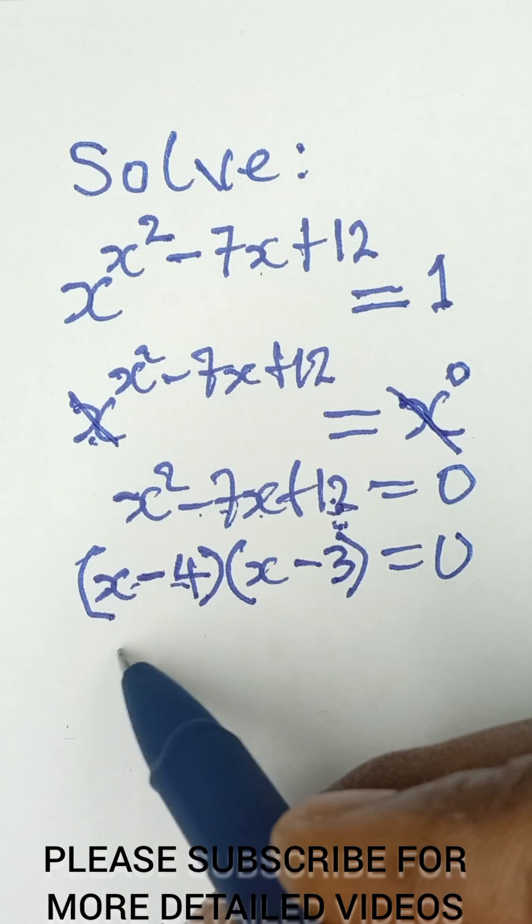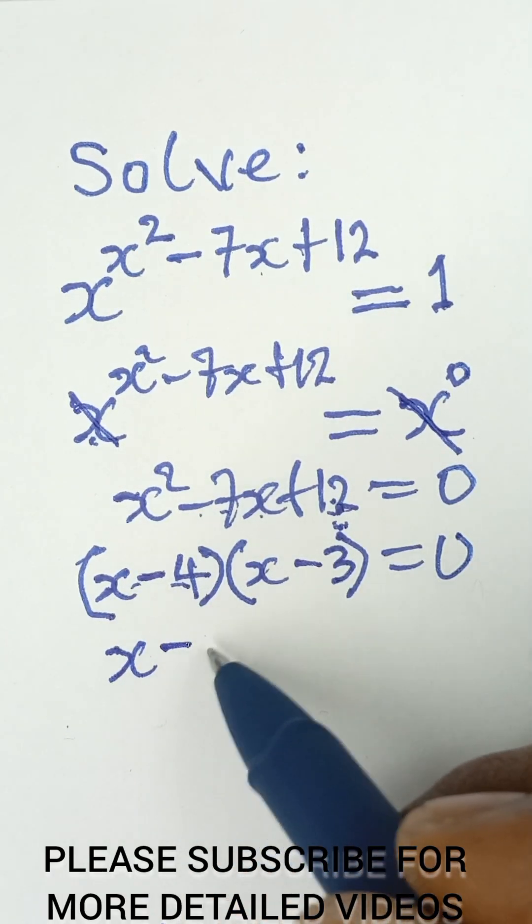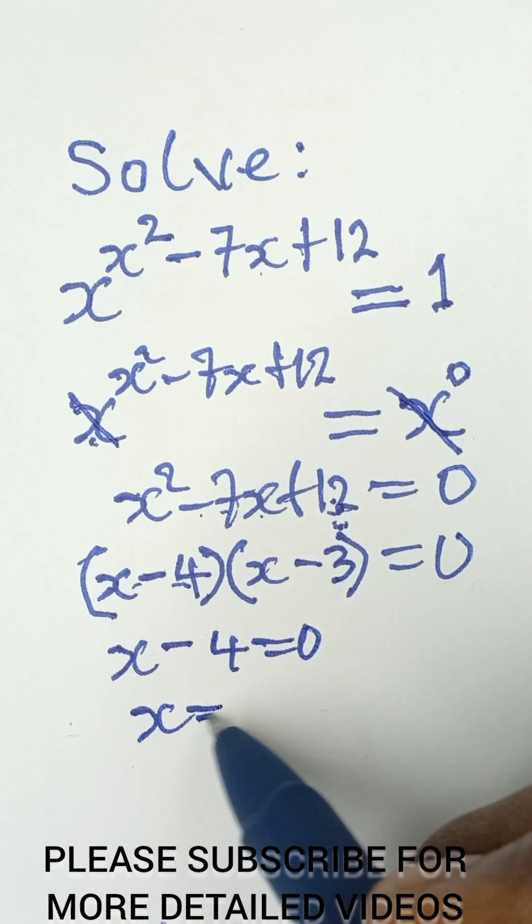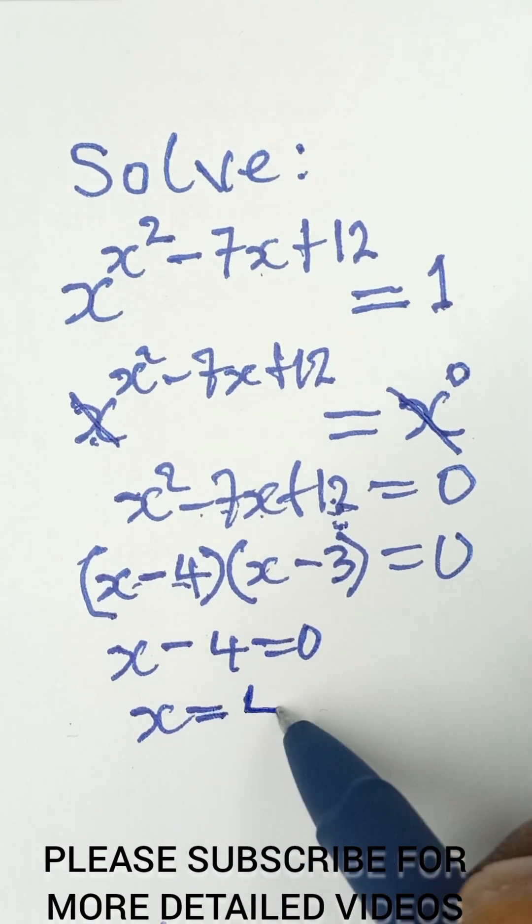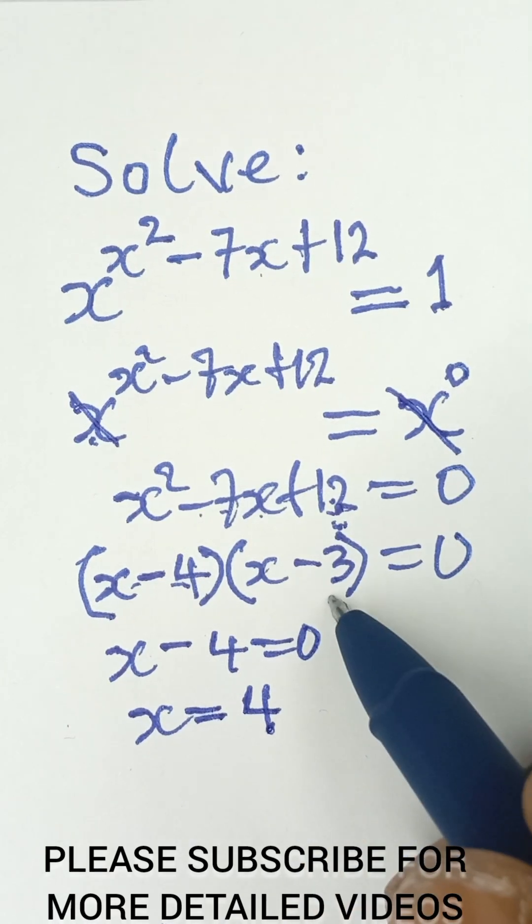When we equate this to 0, it gives us x minus 4 is equal to 0. And that will give us x is equal to 4. That's positive 4. When this negative 4 goes to that side, it becomes positive 4.